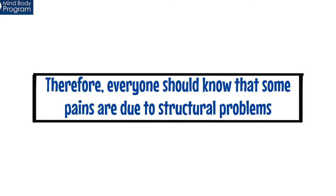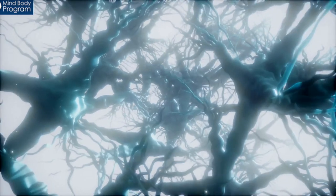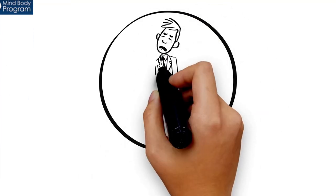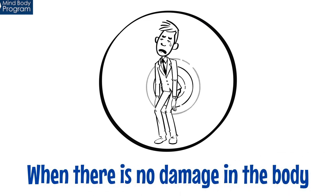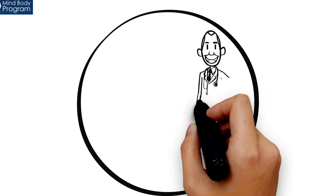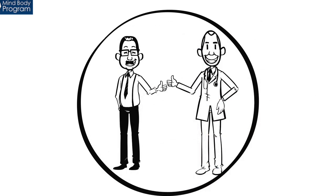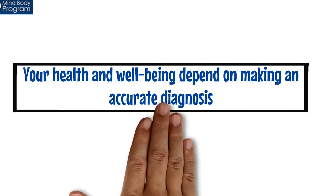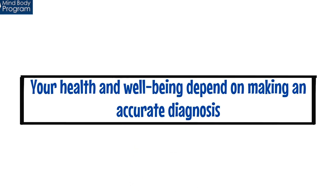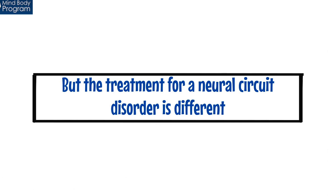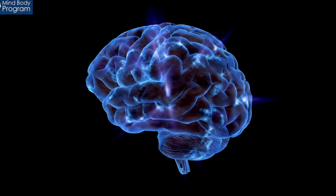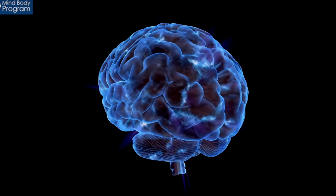Therefore, everyone should know that some pains are due to structural problems and other pains are due to neural circuits in the brain. Chronic pain is often caused by neural circuits when there is no damage in the body, and this is more common than you might think. A good team consisting of you and your doctor can be good detectives and figure this out. Your health and well-being depend on making an accurate diagnosis. The treatment for a structural disorder is medical treatment, but the treatment for a neural circuit disorder is different — it is to reprogram your brain to unlearn the pain.